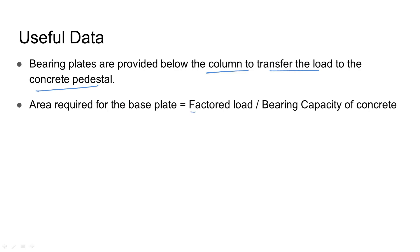Area required for the base plate is factored load divided by bearing capacity of concrete. Bearing capacity of concrete is given by 0.45 FCK, where FCK is the characteristic strength of the concrete.